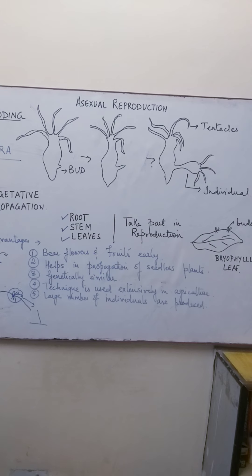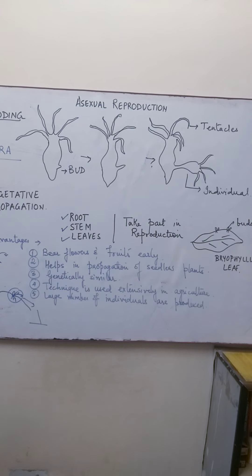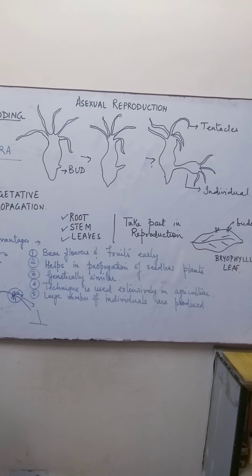Vegetative propagation has definite advantages. The plants developed by this method bear flowers and fruits early — they grow very rapidly and develop flowers and fruits much earlier compared to plants which develop by seeds. Also, this method enables seedless plants to continue with their species. There are many seedless varieties such as banana, orange, and rose, and those plants can propagate themselves with the help of this method.